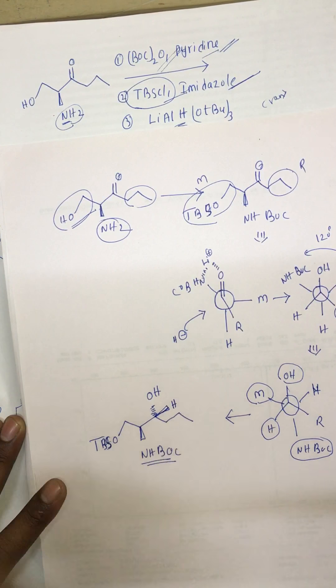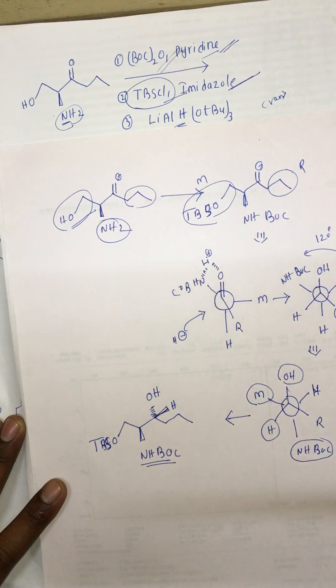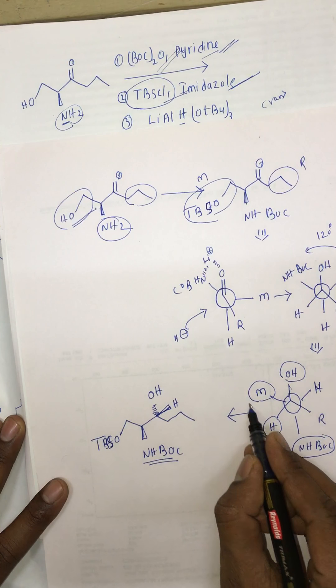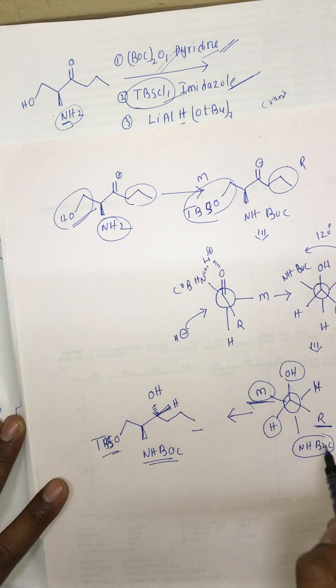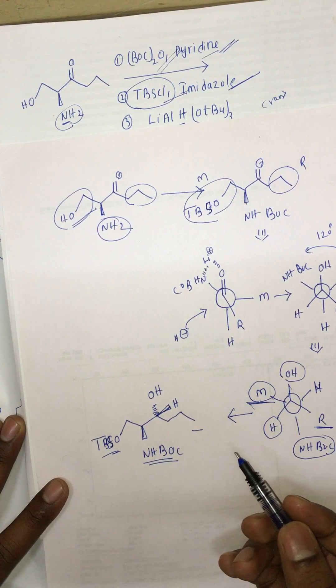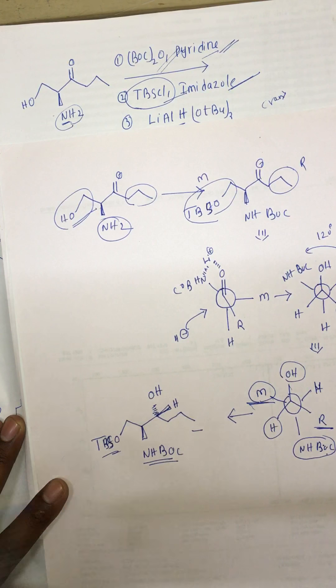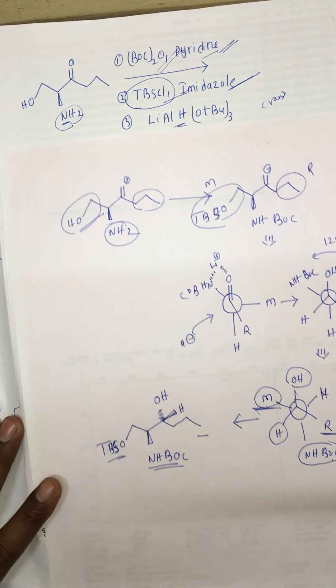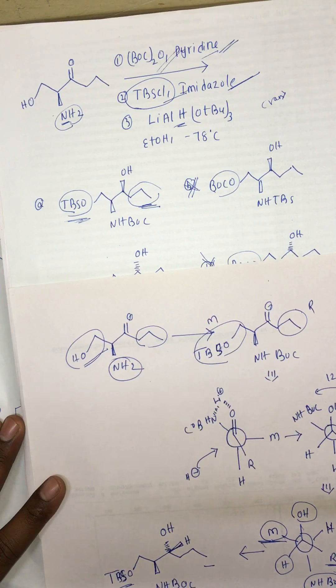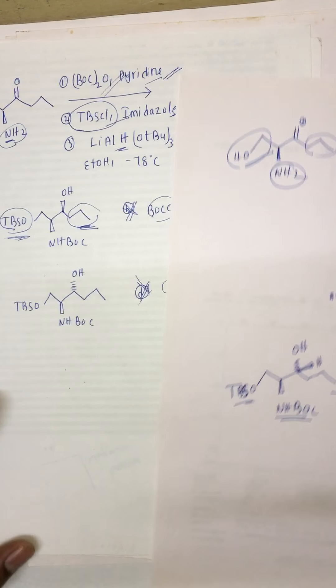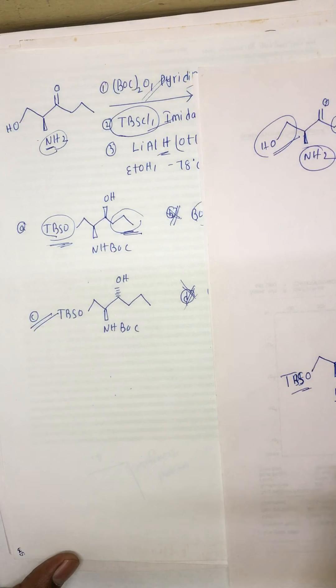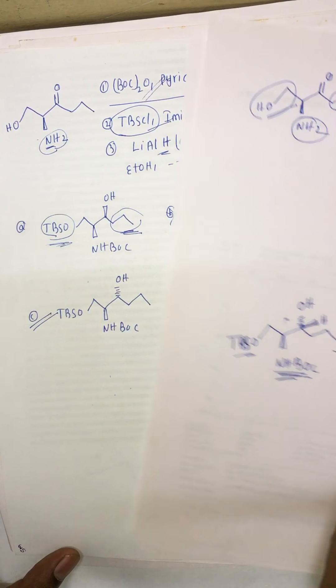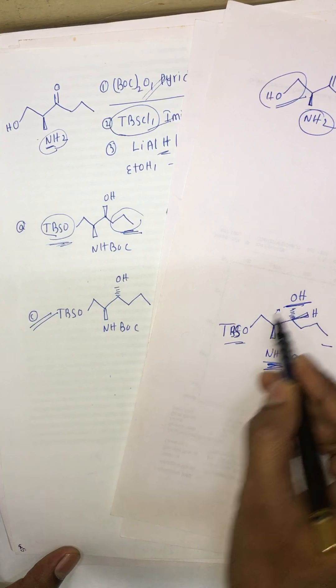They have to be anti-periplanar to bring them onto the plane, and here NHBOC and OH are anti-periplanar to each other. If you see the options, option C is the correct answer because NHBOC and OH are in opposite directions.